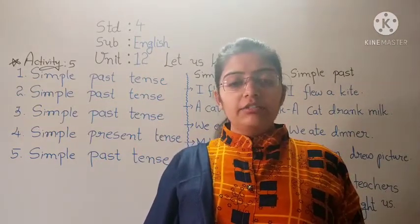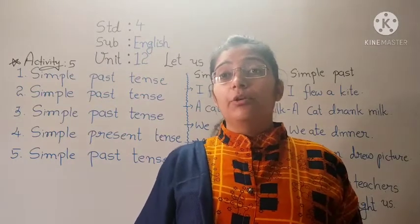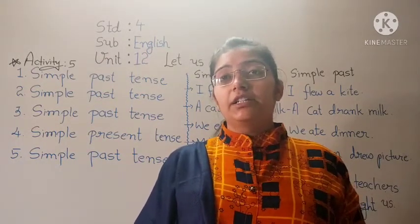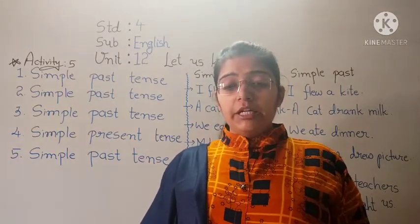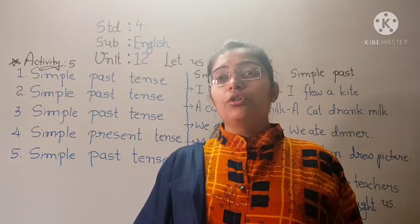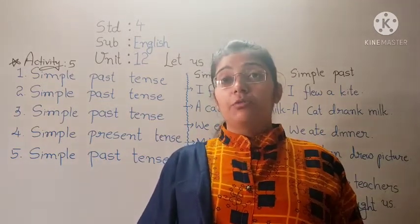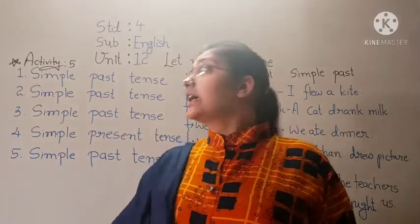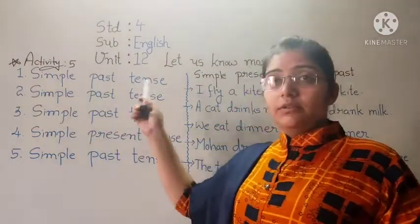Identify the tense of the sentences given below. Humay jo sentences diye gaye hain, wo humay identify karne hain. First one is: 'He lost his way.' Lost is the past form, so the first sentence is Simple Past Tense.